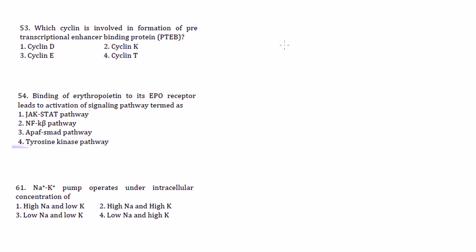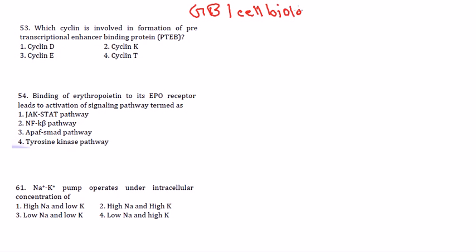Welcome back. We are analyzing different questions from the Group B part of the CSI NET question paper. We are looking at the type of questions — it's always my recommendation to look at the type of questions, not directly at the question. We've previously talked about four different varieties of questions that can be asked in CSI NET Group B. Today we are looking at cell biology questions.